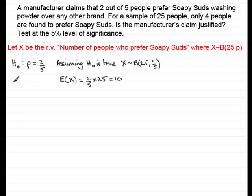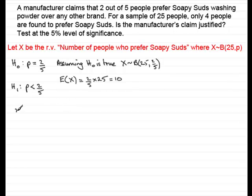That would seem to suggest that the proportion, maybe, is less than 2 in 5. So the alternative hypothesis will be P is less than 2 fifths. This is a one-tailed test in the lower tail. Our observed value x is 4, and we're testing at the 5% level, so alpha equals 5%, or as a decimal, 0.05.